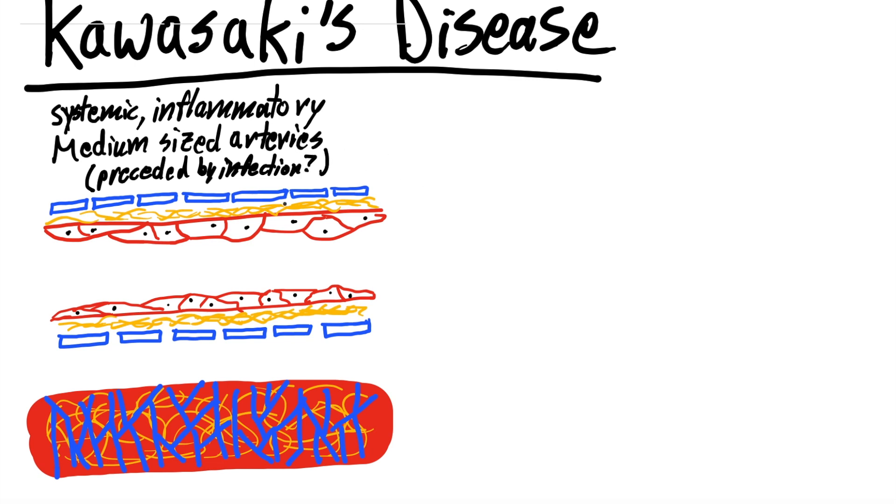What does this systemic inflammatory response to the medium-sized arteries look like and what does it cause? Here I have some blood vessels. This is a transverse section of a blood vessel. You have your endothelial cells aligning the blood vessel. This layer here is your collagen in yellow. Then you have your smooth muscle cells in blue. If it was closed over, you have these smooth muscle cells overlapping the blood vessel, you have the collagen layer underneath, and then you have your endothelial cells all closed in. This is just looking at the tubular blood vessel.